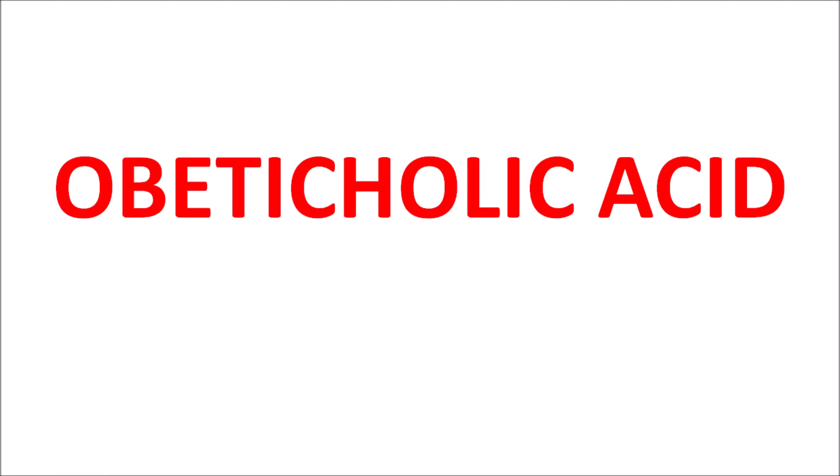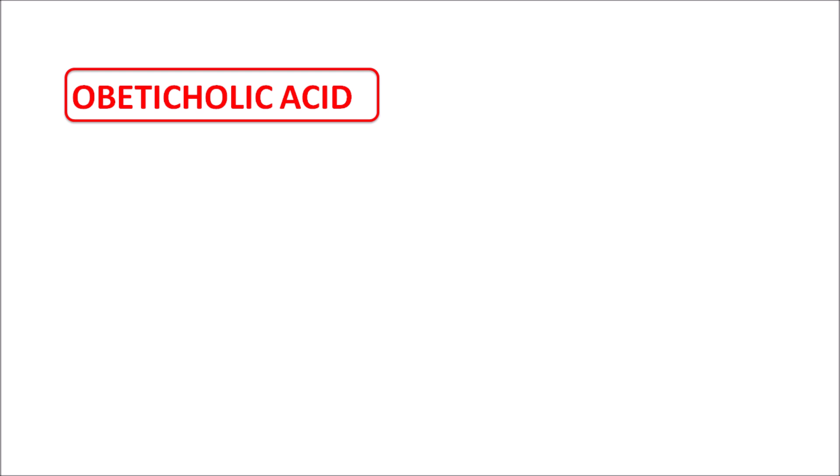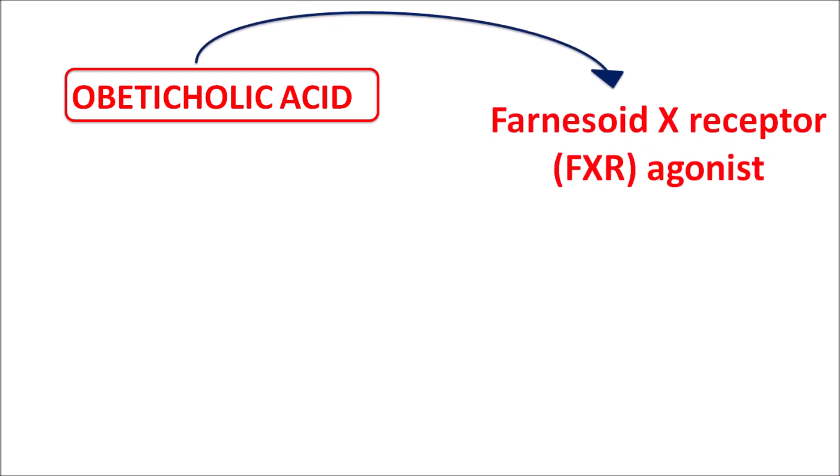In this video, let us discuss the new generation drug obeticholic acid. Obeticholic acid is a farnesoid X receptor (FXR) agonist. The farnesoid X receptors are receptors for bile acids, and when bile acids act on these receptors, they can reduce the bile acid levels within the hepatocytes, which reduces hepatic apoptosis and cirrhosis. Obeticholic acid, widely known as OCA, is a derivative of chenodeoxycholic acid, the secondary bile acid present in our body.